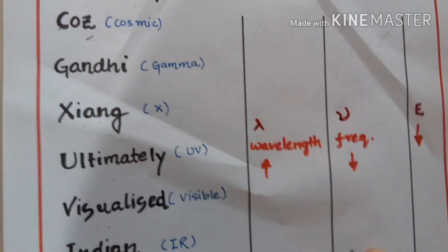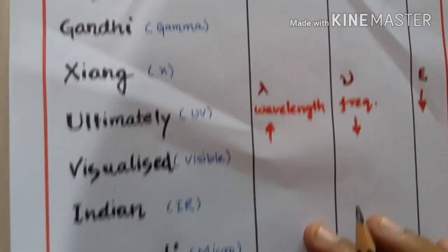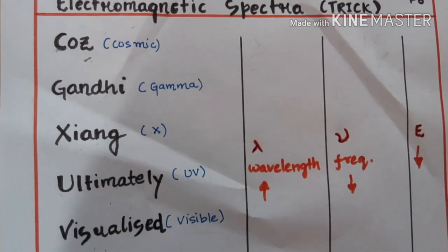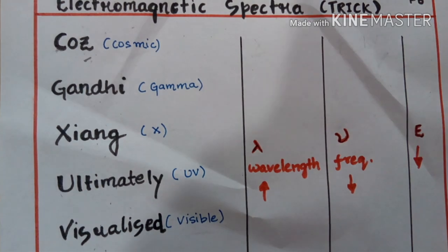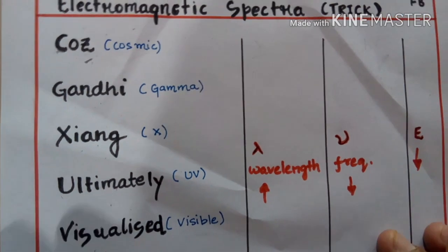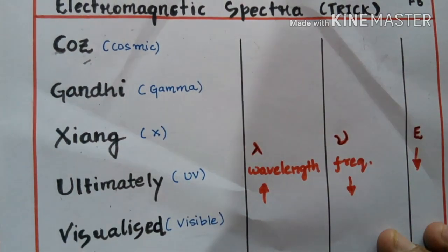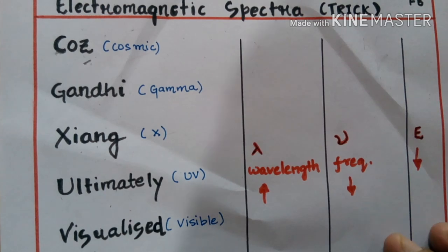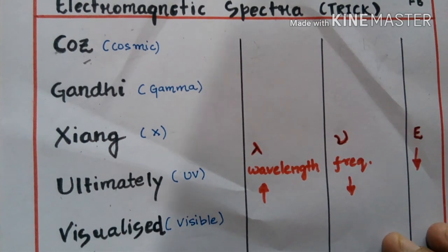Now, what does this trick mean? 'Cause' stands for cosmic rays, 'Gandhi' means gamma rays, 'Jiang' means X-rays, 'ultimately' means UV rays, and 'visualize' means visible rays.